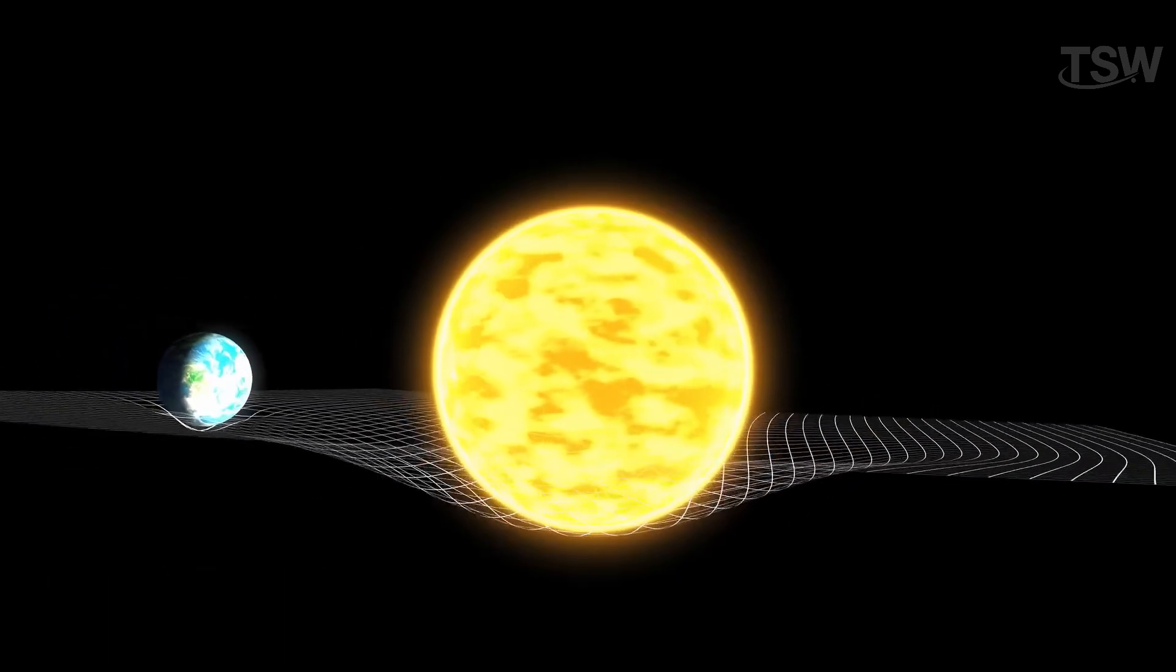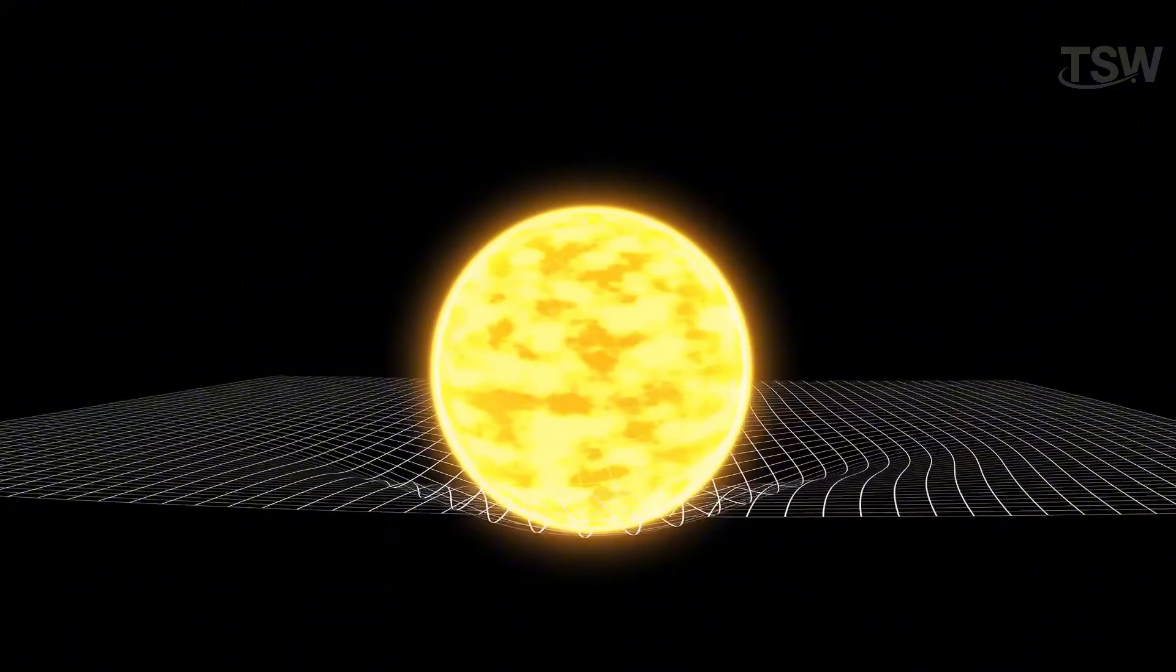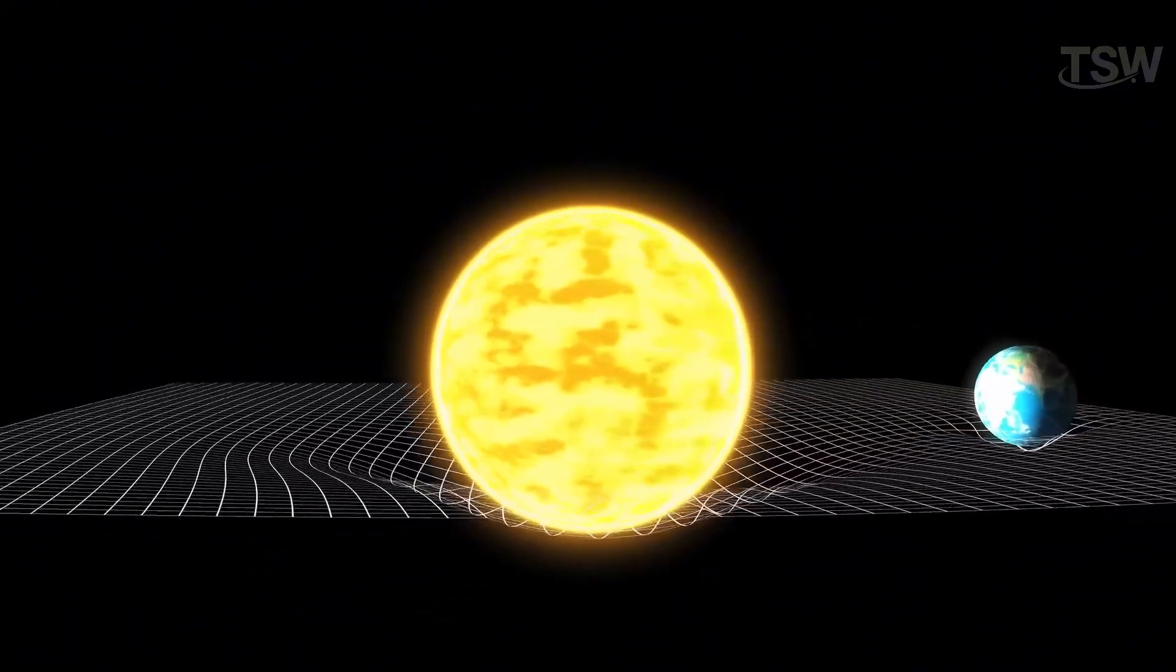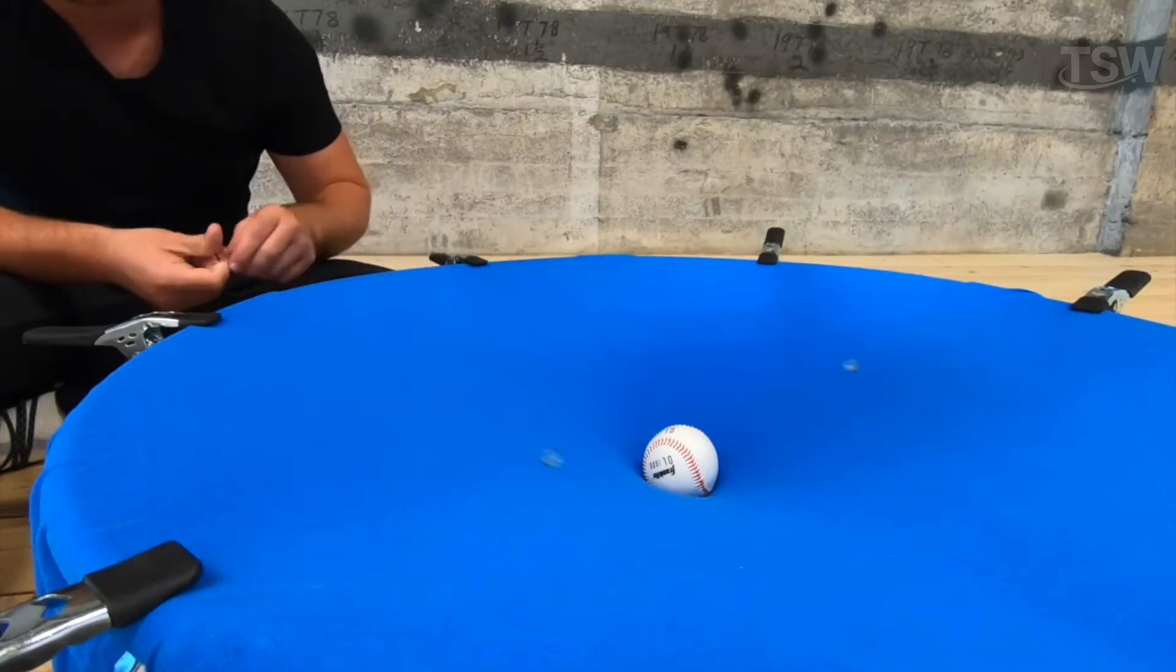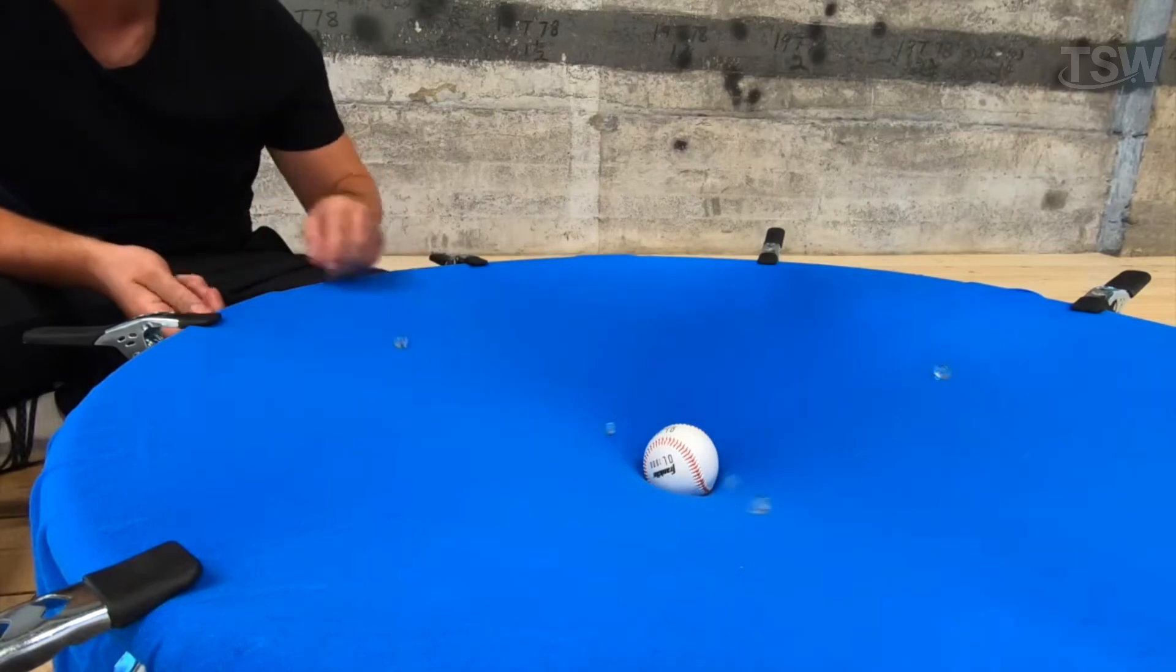In practice, Einstein showed that any object with mass is capable of warping the fabric of space-time, like a heavy ball sinking into a stretched sheet, and this curvature affects everything that passes nearby.